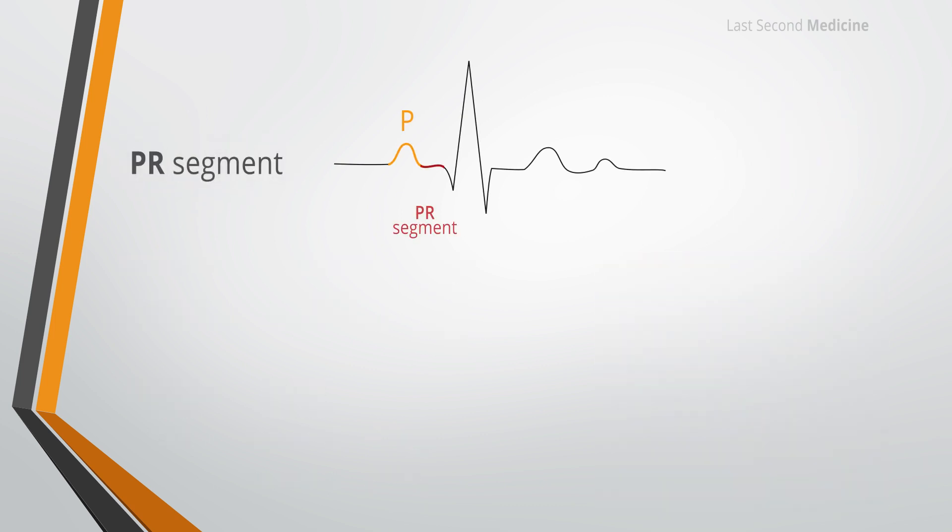After the P wave, there is a brief return to the isoelectric line resulting in the PR segment. This isoelectric part indicates the normal physiological delay of impulse in the atrioventricular node. PR segment along with P wave is called the PR interval.